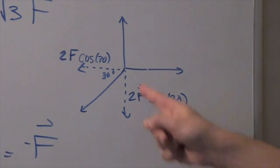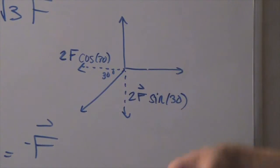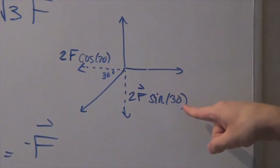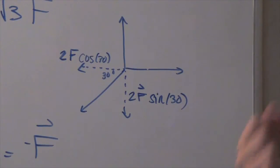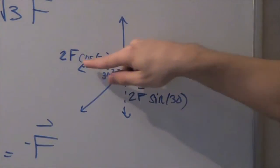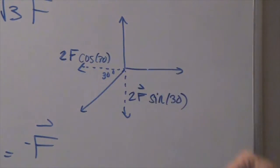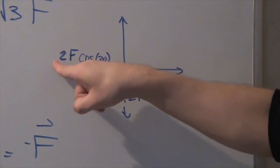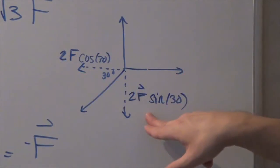To find the y-component of the 2F force, we use opposite over hypotenuse, giving us 2F × sine 30. To find the x-component, we use adjacent over hypotenuse, giving us 2F × cosine 30. So the y-component is 2F·sin30 and the x-component is 2F·cos30. Notice that both of these components point in the negative direction, so both are negative.